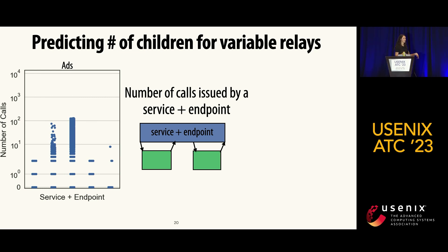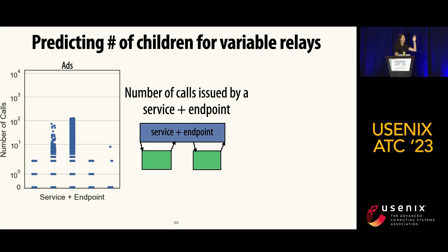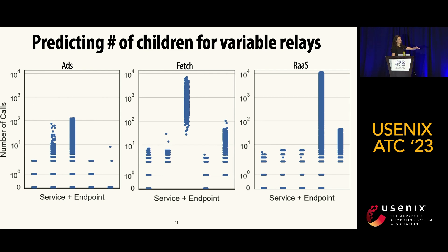On the y-axis I have the number of calls, log-scaled from 0 to 10,000, with one data point for every invocation of the service-plus-endpoint. Some parents have clusters of invocations centered around certain values, while others have a lot of variation in the number of outgoing calls they make. This trend is consistent across all three profiles.